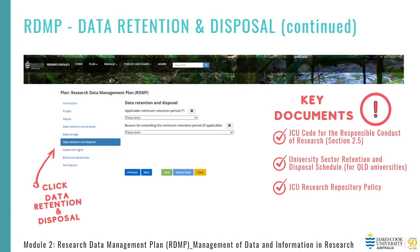I just want to highlight some really important documents that you need to be familiar with. Firstly, JCU Code for the Responsible Conduct of Research, specifically Section 2.5. And the university sector retention and disposal schedule for Queensland universities. And of course, your research output — for example, your publication or thesis — that also needs to be stored. You can find out more about those requirements in the research repository policy, which is located on JCU's policy library.